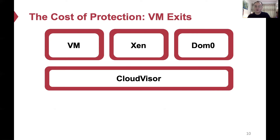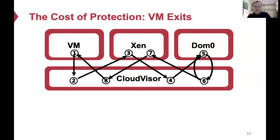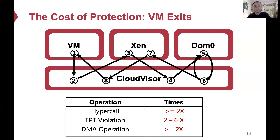The design of nested virtualization may cause a large number of VM exits. Using I/O operations in Xen as an example: each I/O operation firstly gets trapped into CloudVisor, which forwards the control flow to the Xen hypervisor and DomainZero for further processing. Since DomainZero is untrusted and unable to access guest memory, it triggers one VM exit each time it reads or writes data from guest memory when handling I/O. The reverse procedure costs the same number of ring crossings. The large number of VM exits incurs huge runtime performance overheads for basic VM operations, including hypercalls and EPT violations.